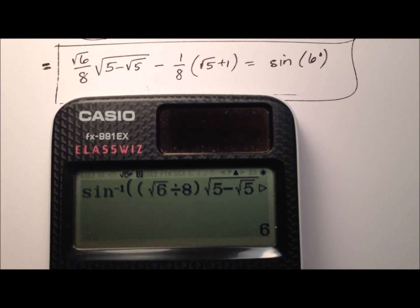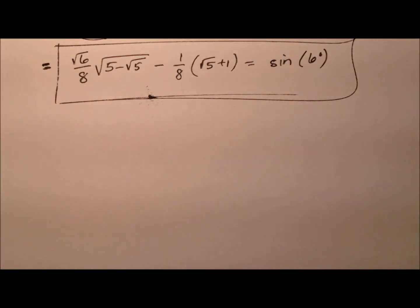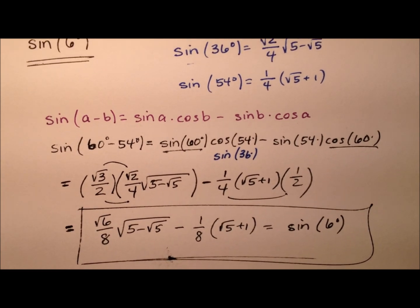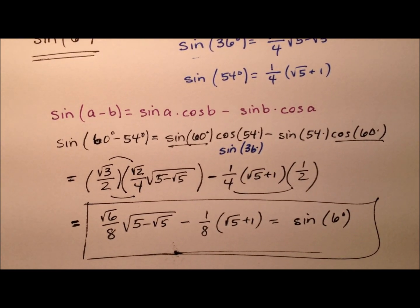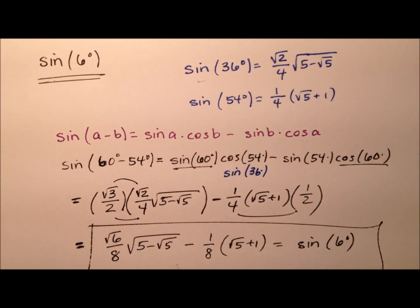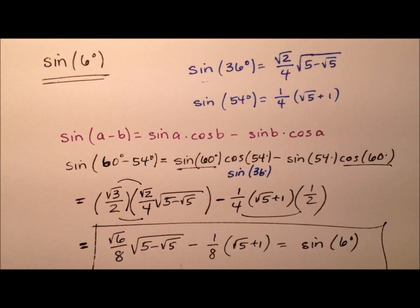So here we have seen that we have the exact value then for the sine of 6 degrees, and we worked that out using the difference formula for sine, and we did have to include two other values that we had found in a previous video, and again, those are linked down in the video description.